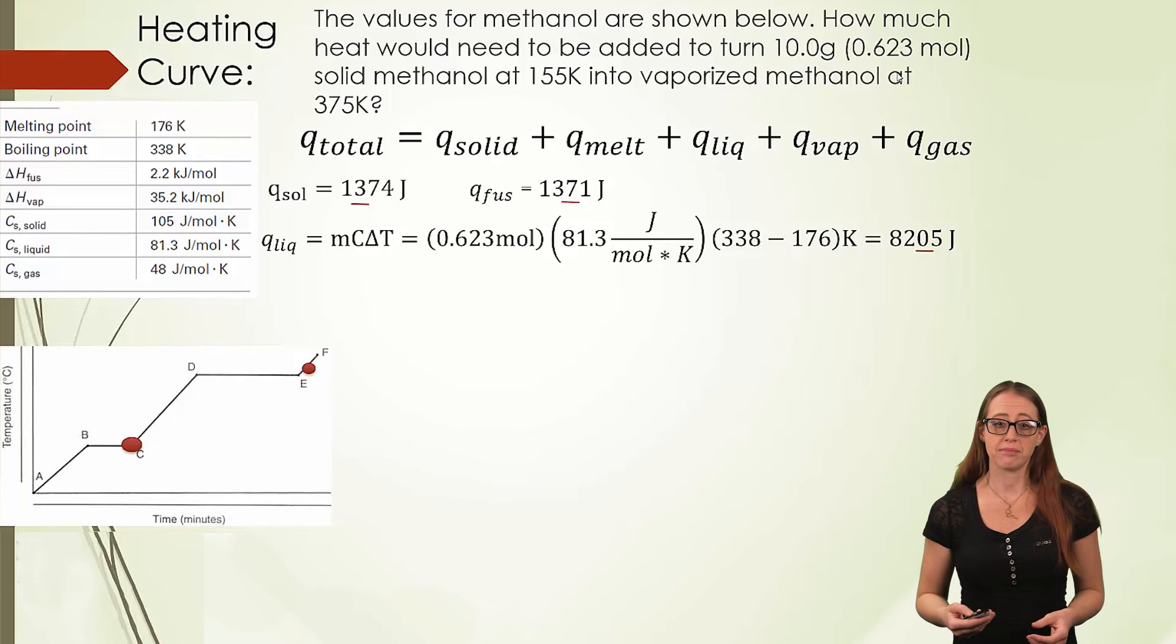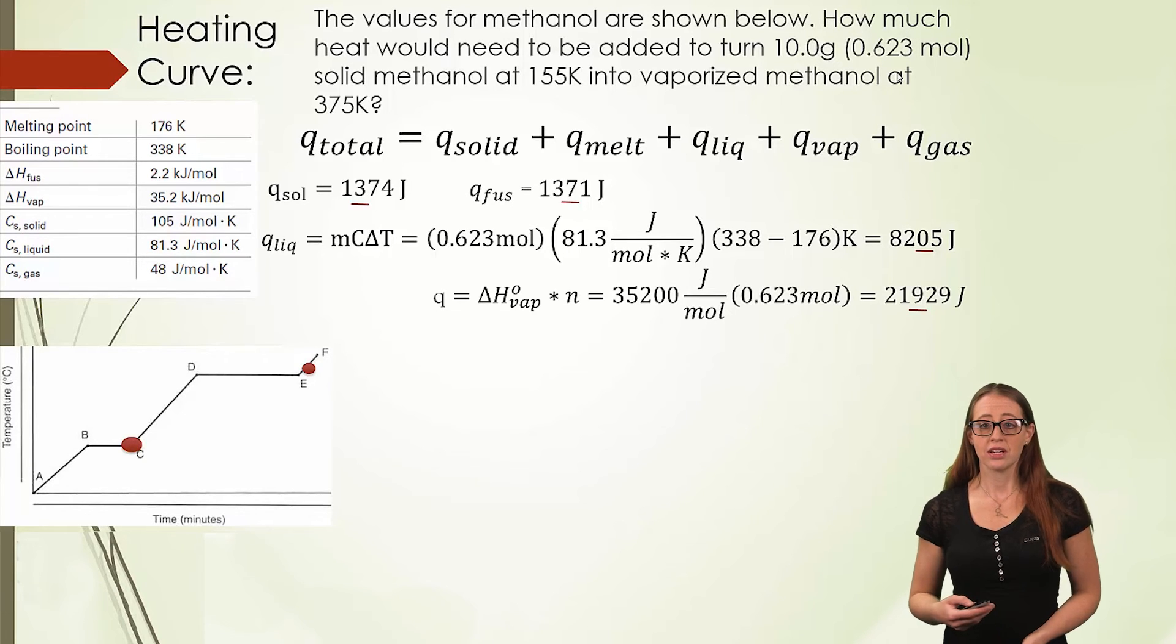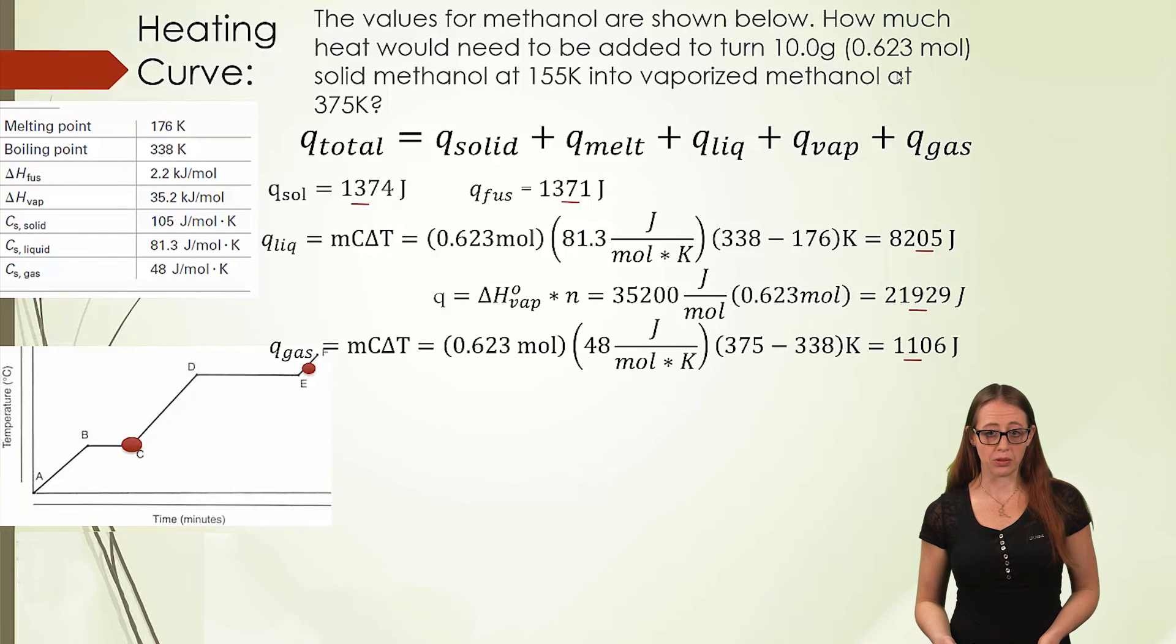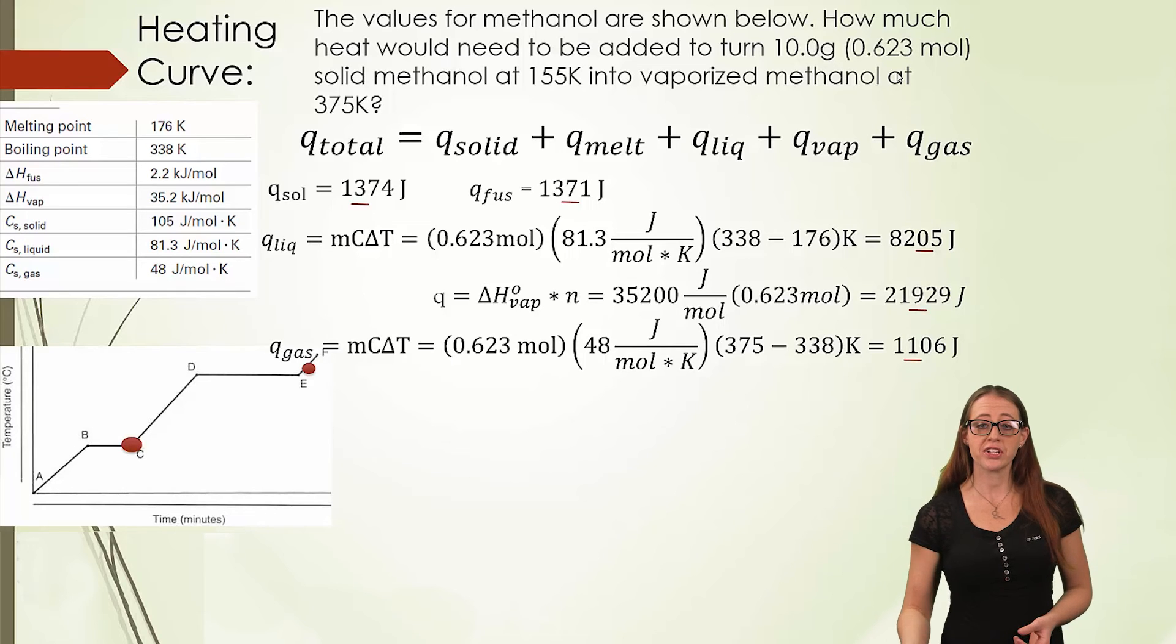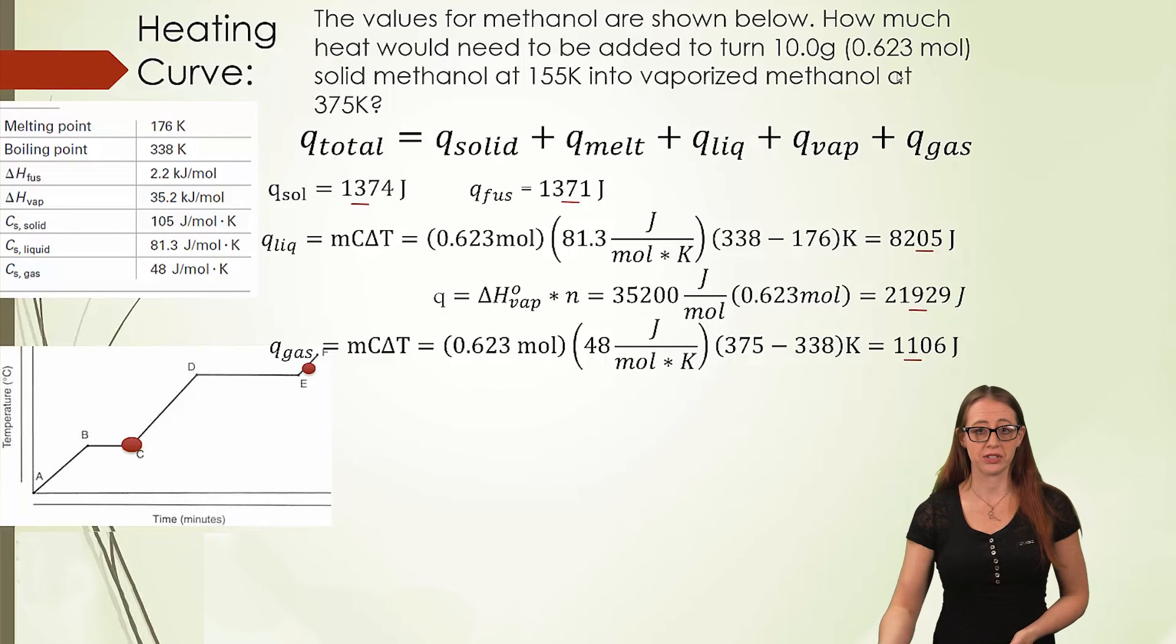Our next step is to boil the methanol. To do that, we need to multiply the heat of vaporization by the moles to give us 21,900. And finally, we heat the gaseous methanol, multiplying the moles by the specific heat of the gaseous methanol, and then the change in temperature, only from the boiling point up to the final given temperature. This gives us 1,106 joules.